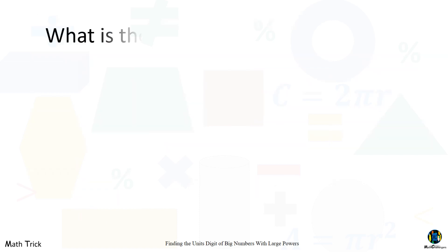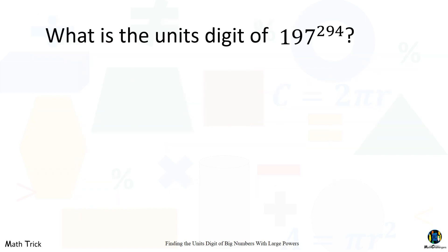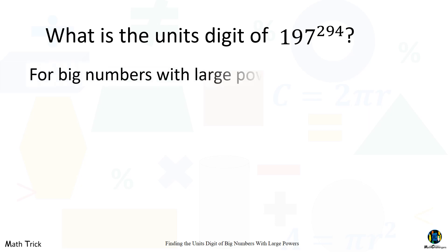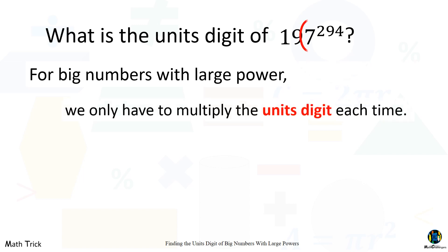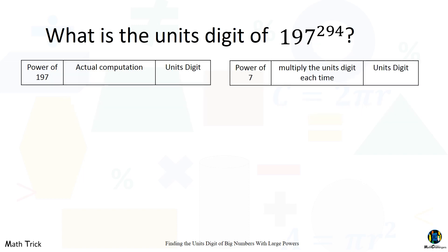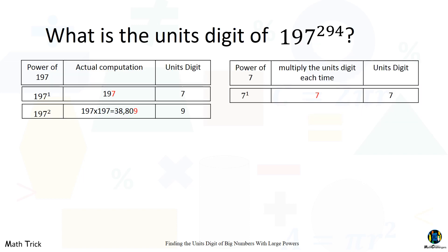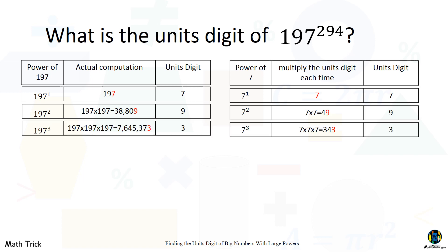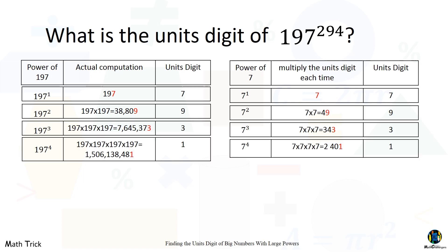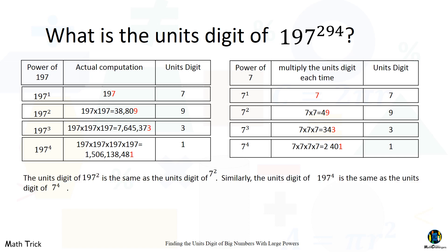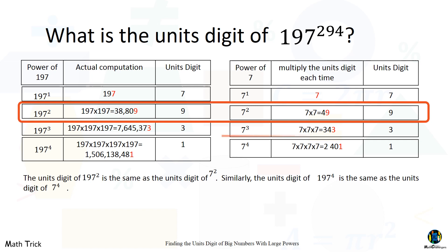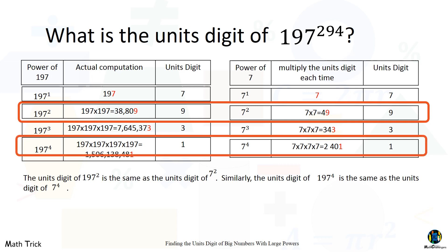What is the unit's digit of 197 raised to the power of 294? For big numbers with large powers, we only have to multiply the unit's digit each time. The unit's digit of 197 squared is the same as the unit's digit of seven squared. Similarly, the unit's digit of 197 to the fourth power is the same as the unit's digit of seven to the fourth power.